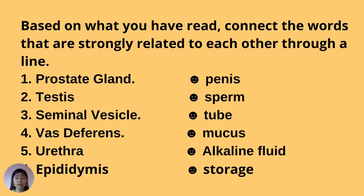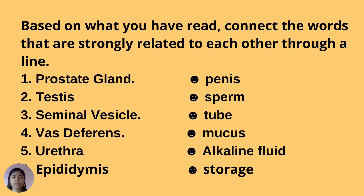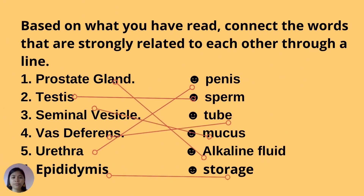Based on what you have studied, connect the words that are strongly related to each other. The items are: 1 prostate gland, 2 testes, 3 seminal vesicle, 4 vas deferens, 5 urethra, and 6 epididymis — matched to: penis, sperm, tube, mucus, alkaline fluid, and storage. Correct answers: prostate gland → alkaline fluid; testes → sperm; seminal vesicle → mucus; vas deferens → tube; urethra → penis; epididymis → storage.